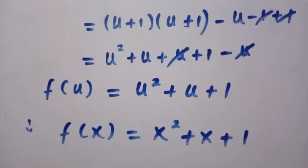Then we have to change u to x, as we have f of x equals x squared plus x plus 1. So this is how I solve this in two different ways. And that is all.